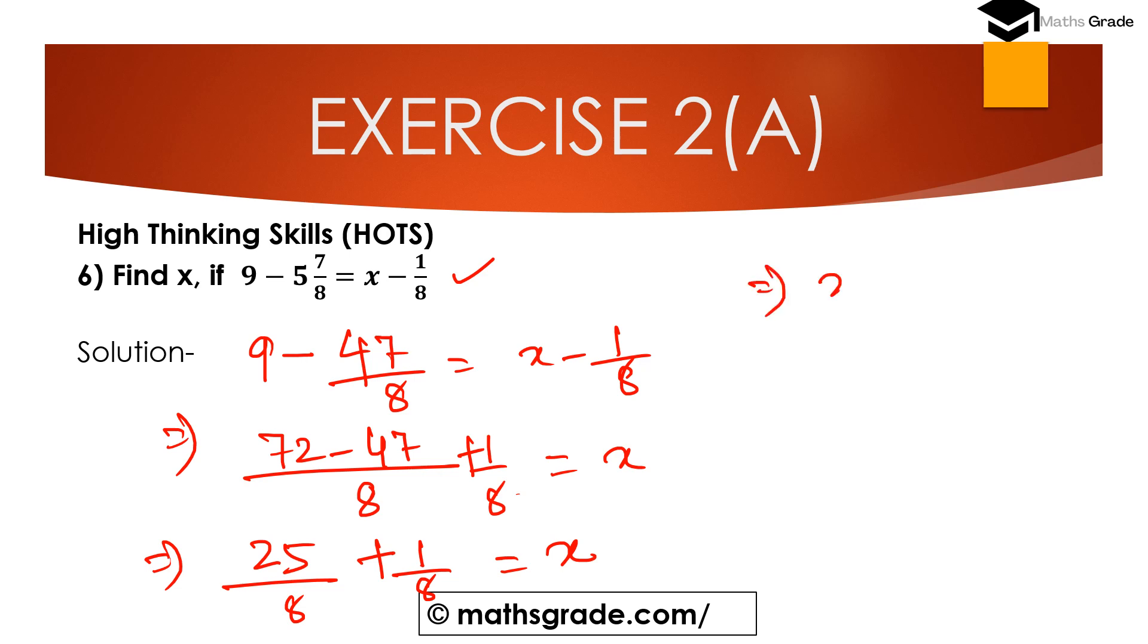This implies X is 26 divided by 8, which is 3 times 8 is 24, so 3 and 2 divided by 8. 24 plus 2 is 26 divided by 8. So X is 3, 2 divided by 8. This is the answer.